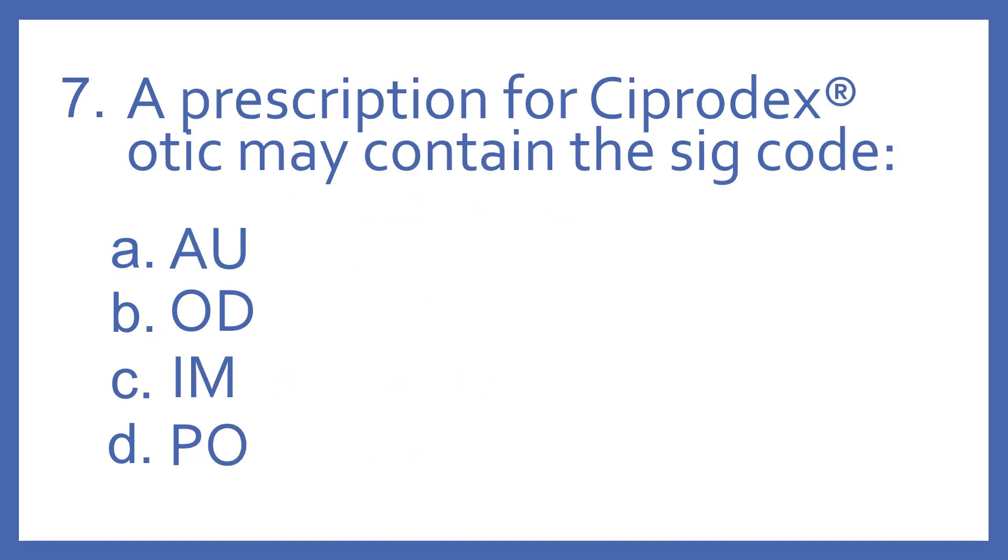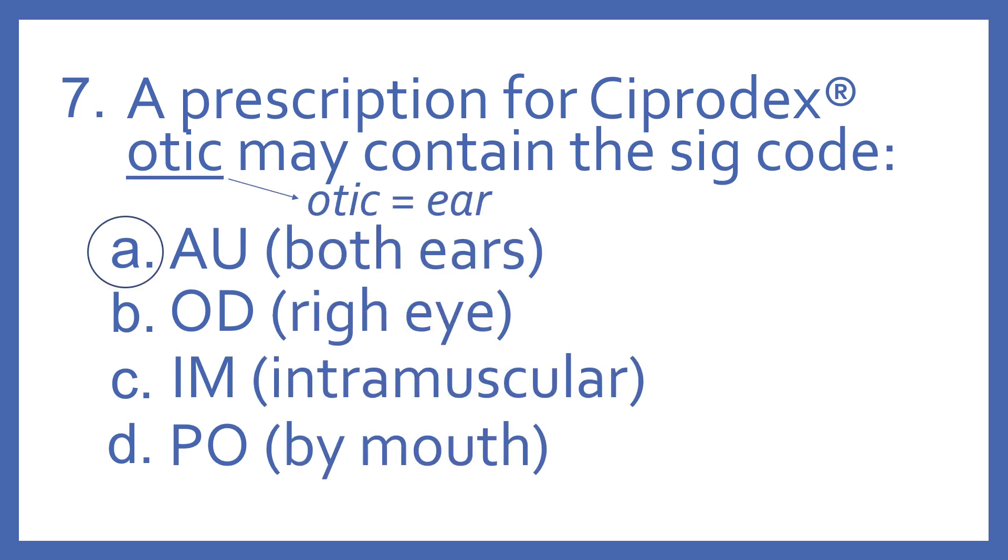Number seven, a prescription for Ciprodex ODIC may contain the SIG code A, AU, B, OD, C, IM, or D, PO. And the answer is A, AU. ODIC means ear, so AU, SIG code, means both ears. OD is right eye. IM is intramuscular, which means into a muscle, usually with an injection. And PO means by mouth.